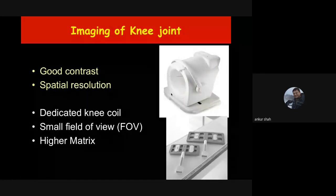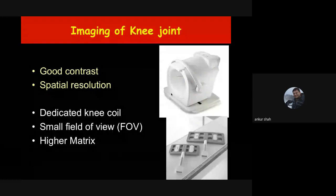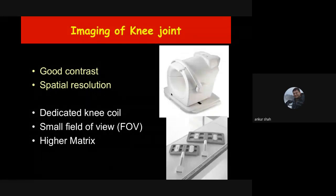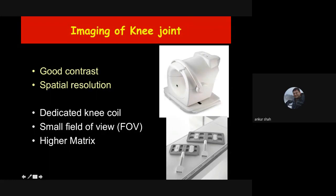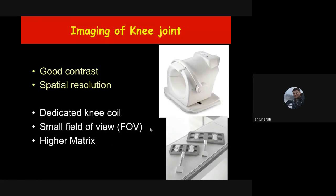This is why MR films from different centers may look very different — some very clear, some not — because either the proper coil is not used, proper sequences are not used, or a large field of view is used. Each joint has a specific ideal field of view. If you try to do MRI of almost half the femur with half the tibia along with the knee joint, the resolution will be very poor.